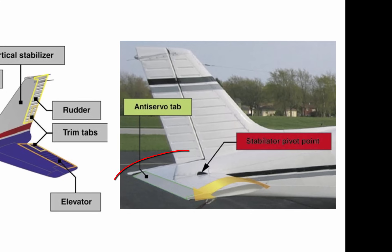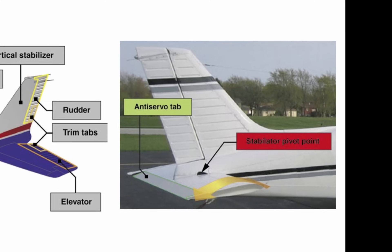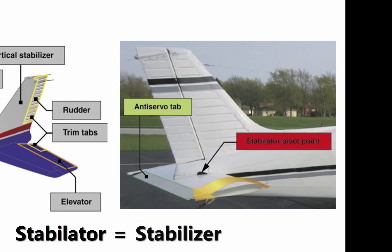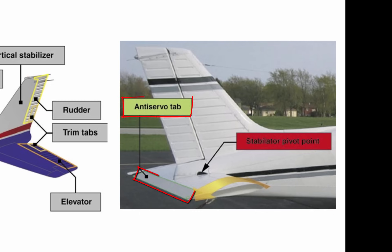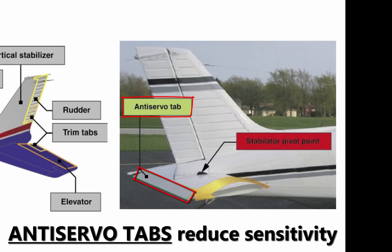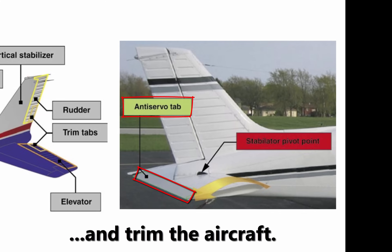A second type of empennage design does not require an elevator. Instead, it incorporates a one-piece horizontal stabilizer that pivots from a central hinge point. This type of design is called a stabilator and is moved using the control wheel just as the elevator is moved. Stabilators have an anti-servo tab extending across their trailing edge. The anti-servo tab moves in the same direction as the trailing edge of the stabilator and helps make the stabilator less sensitive. The anti-servo tab also functions as a trim tab to relieve control pressures and helps maintain the stabilator in the desired position.